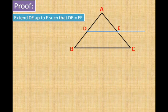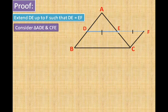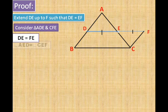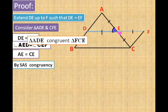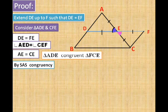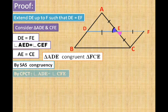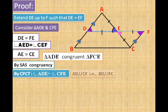Now we start the proof. ABC is the triangle; D and E are the midpoints. We extend DE up to F such that DE equals EF, and then join FC. We prove congruency between triangle ADE and triangle CFE. DE equals FE by construction; the angles at E are vertically opposite and hence equal; and AE equals CE since E is the midpoint of AC. By SAS congruency, triangles ADE and FCE are congruent. By CPCT, angle ADE equals angle CFE.